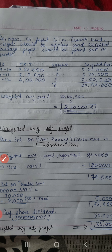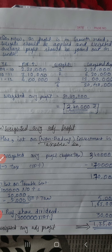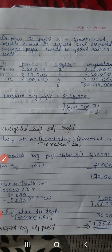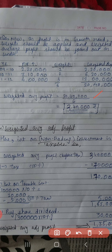22 lakhs 80,000 minus 8 lakhs 80,000 gives 14 lakhs. From this, deduct preference share capital. Whenever preference share capital appears in a question, deduct it here — highlight it so you remember to deduct it during capital employed calculation. So capital employed will be 11 lakhs. Expected profit formula: capital employed into expected rate of return = 11 lakhs × 10% = 1 lakh 10,000. Be very careful with capital employed — any mistake in capital employed makes the whole example wrong because expected profit will be wrong and goodwill will be wrong.